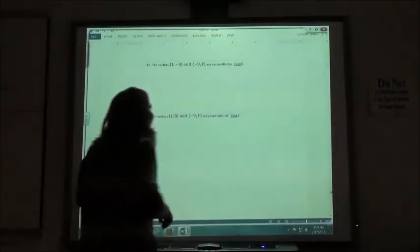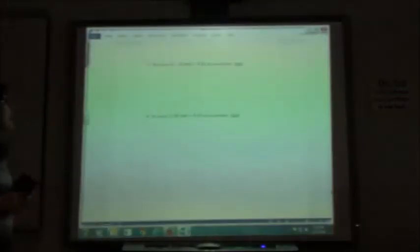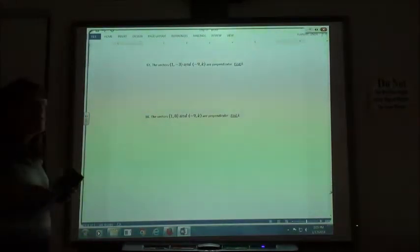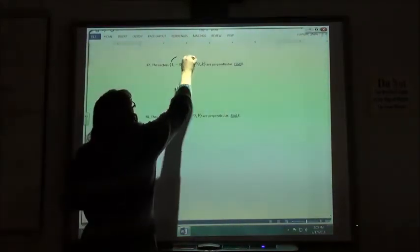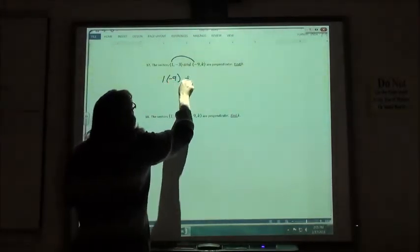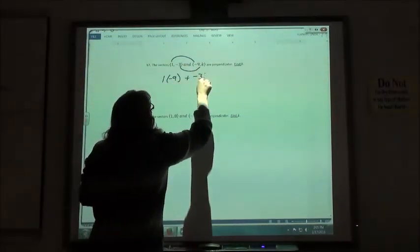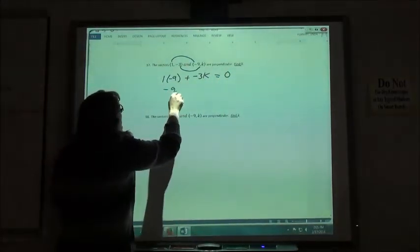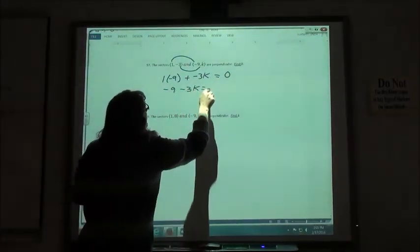Again, I have the vector 1, negative 3, and negative 9, k. I want them to be perpendicular, so their dot products must equal 0. So 1 times negative 9 plus negative 3 times k has to equal 0. So negative 9 minus 3k equals 0.